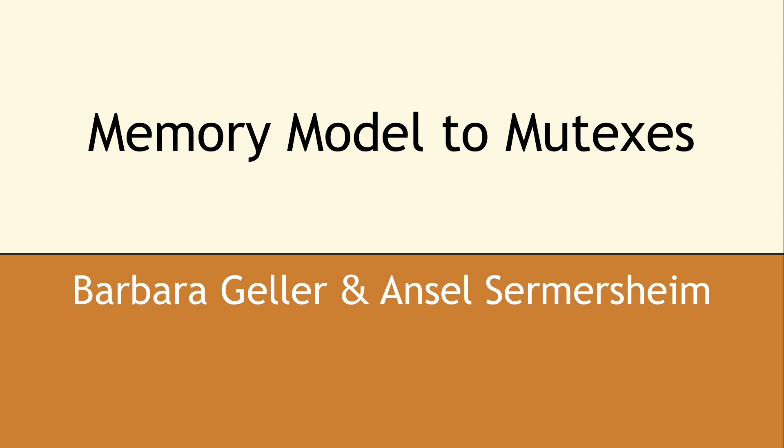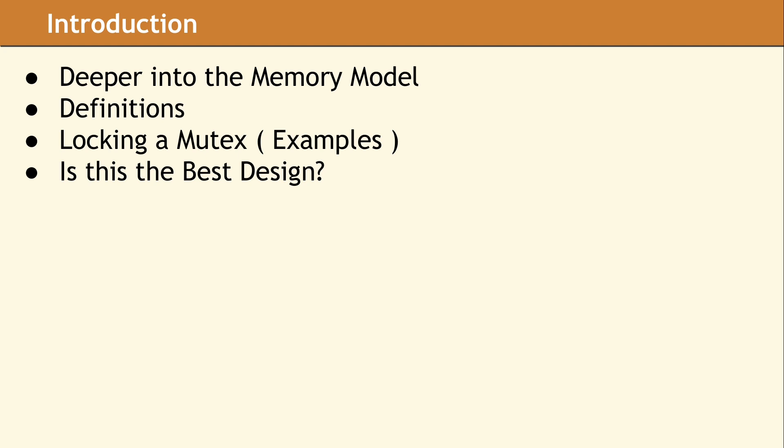In our previous two videos, we have explored the memory model and atomic data types. We suggest watching these before proceeding so you have the full picture. As we continue on, we are bringing mutexes and locks into the mix. The C++ Memory Model makes certain guarantees, and we want to discuss how these affect the behavior of a multithreaded program. We will start with definitions to ensure the basics are well established, then look at some example source code to show how mutexes and locks can be used. In the last part, we want to consider if there is a way to improve how we are using mutexes.